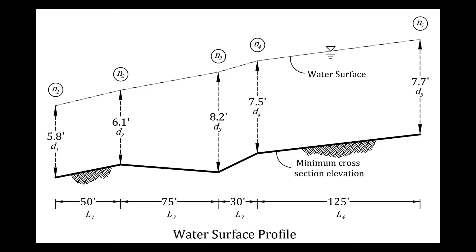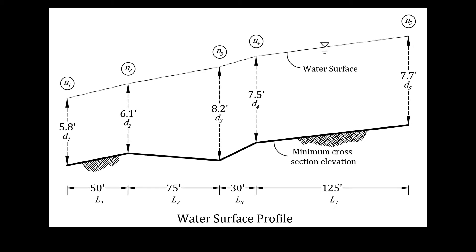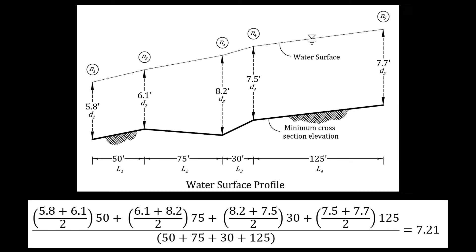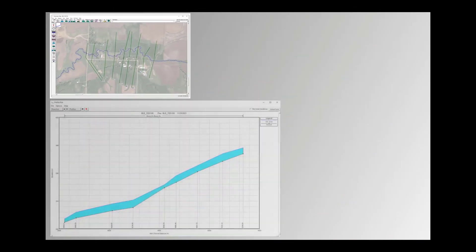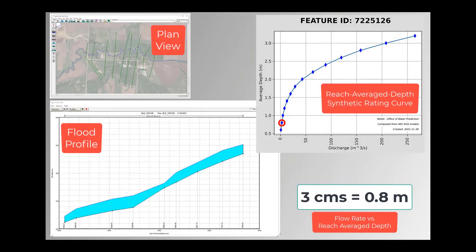From the user-supplied HEC-RAS models, RAS2FIM utilizes HEC-RAS in a one-dimensional steady-state hydraulic analysis to determine a reached average depth. For example, this HEC-RAS model has five cross-sections. When a flow rate of 2,500 cubic feet per second is simulated down the reach, a reach average depth of 7.21 feet is determined. When simulating multiple discharges, ordered pairs of flow rates and average depths are determined.